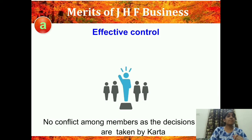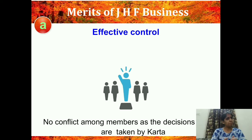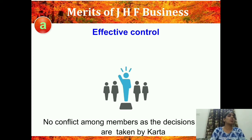The first merit is effective control — there is no conflict among members as decisions are taken by the Kartha. He has total control. Me, my brother, my sister will not fight because the ultimate decision will be taken by the Kartha. No doubt we can give him opinions, but ultimately he is the main Kartha having the main control, so there will be no conflict among the members.